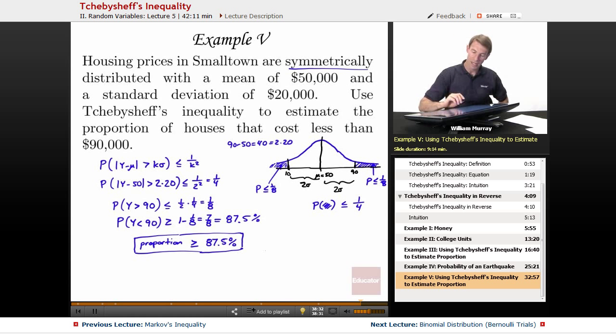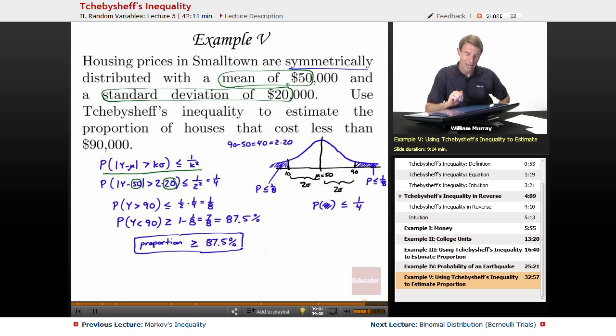So let me recap where that's coming from. The probability that y minus mu is greater than k sigma is less than 1 over k squared. That's just the original version of Chebyshev's inequality. And so in this case, my mu was 50. That came from the mean housing price there. Standard deviation, the sigma is 20. That was also given to us in the problem. Now, I had to figure out what k would be.